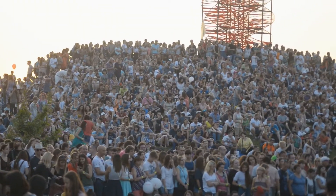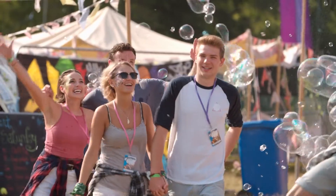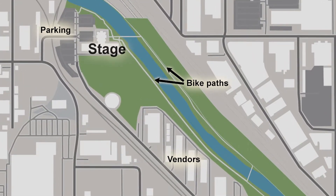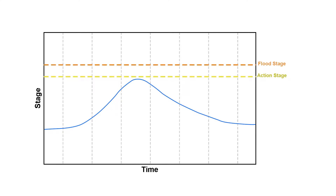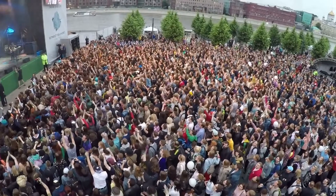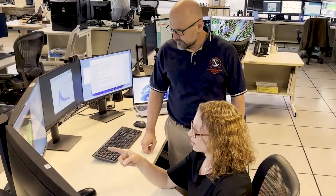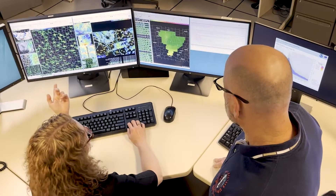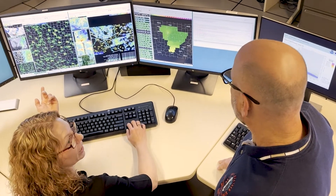Imagine you're forecasting for a major public outdoor event taking place in and near the floodplain of a river. You have a single-value forecast of the expected river level for the time frame of this outdoor event. The river level is expected to peak just below the action stage during the period of concern. Taking this at face value would suggest the river will remain below the action stage, but your experience tells you there could be some error in this forecast in both the peak level and the timing.